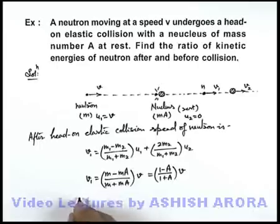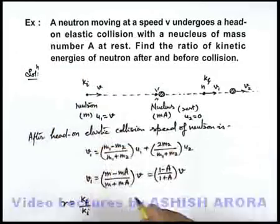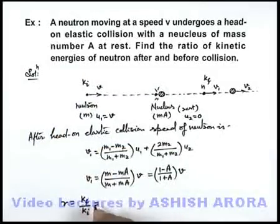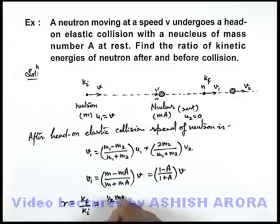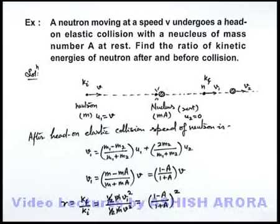If we calculate the ratio of kinetic energy after and kinetic energy before collision, say it is Kf and Ki. Kf is the final kinetic energy of neutron, Ki is the initial energy of neutron. If we substitute the values, the final energy will be (1/2)mv1² divided by (1/2)mv². Here (1/2)m gets cancelled out. It is v1²/v² which can be written as ((1 - A)/(1 + A))². That will be the answer to our problem.